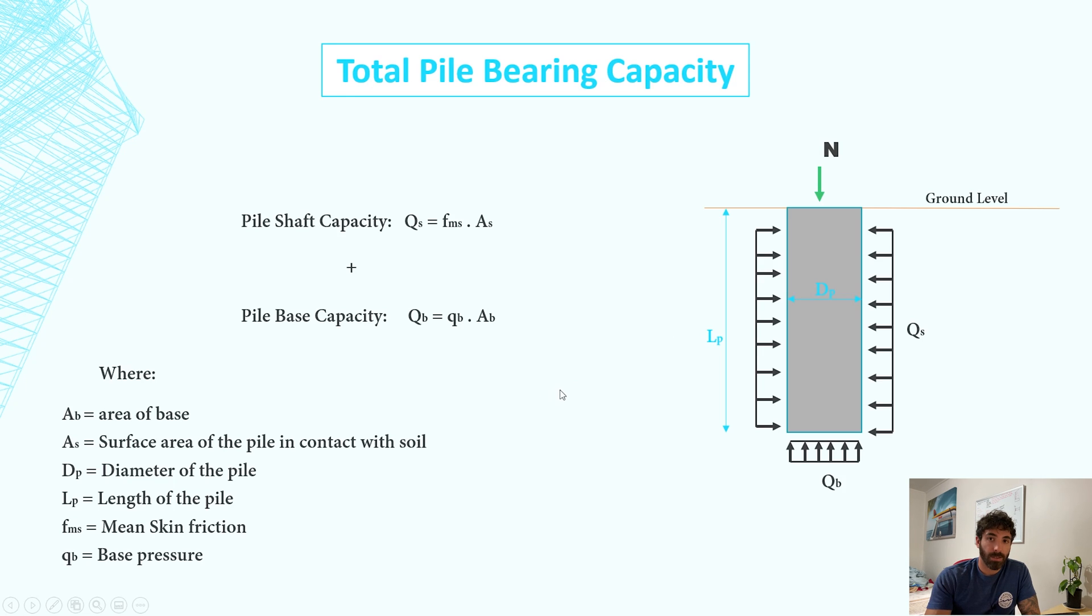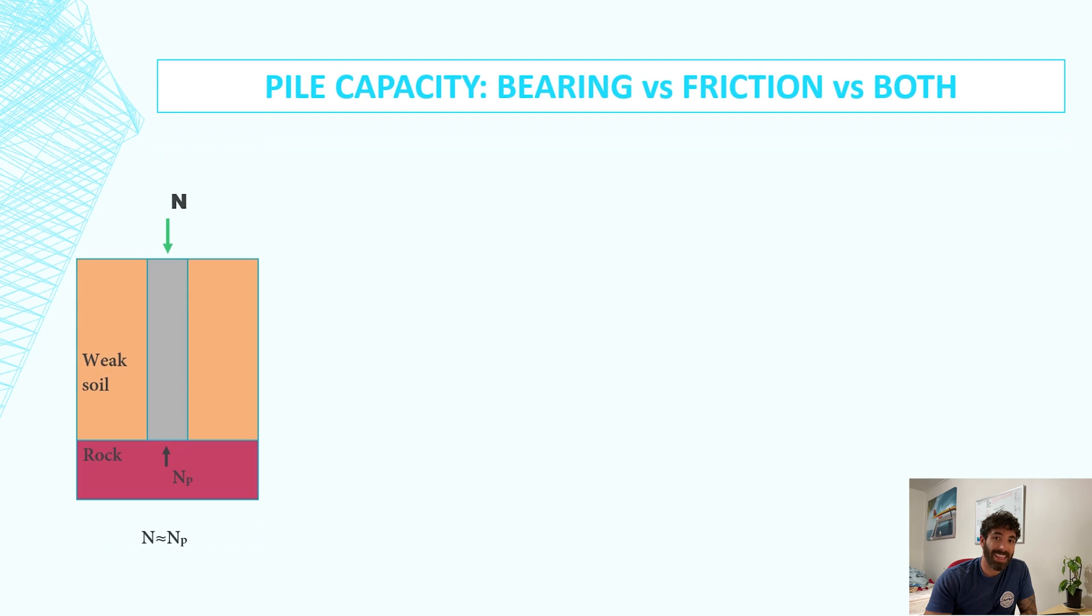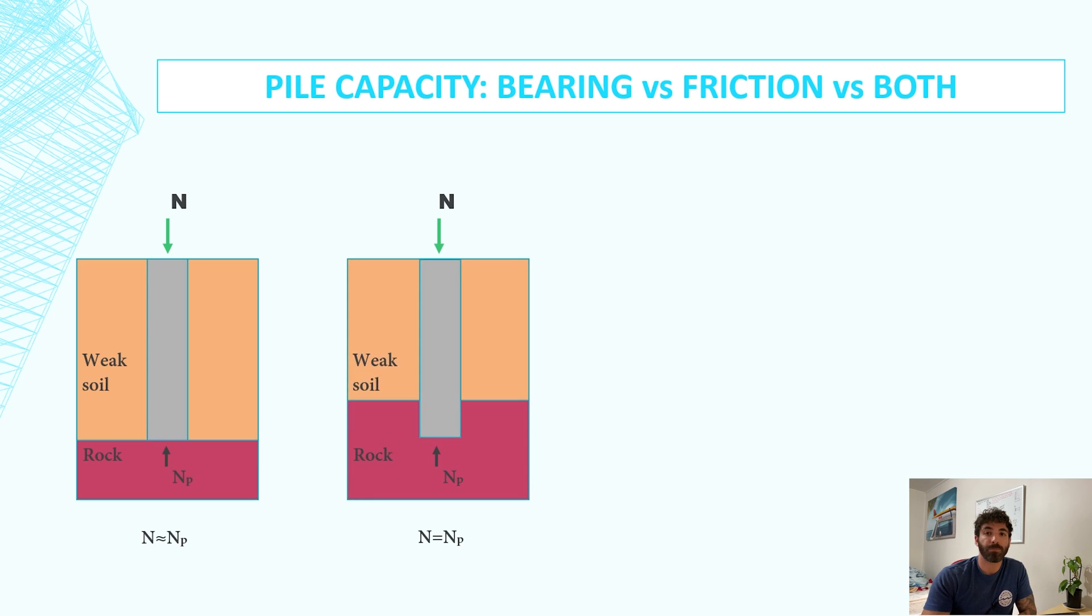Bearing versus friction versus a combination of both. If your pile is sitting on rock, then the base is doing most of the work and the sides are doing virtually nothing at all. However, if the pile is embedded into rock or embedded into strong soil, the base is definitely doing all the work.